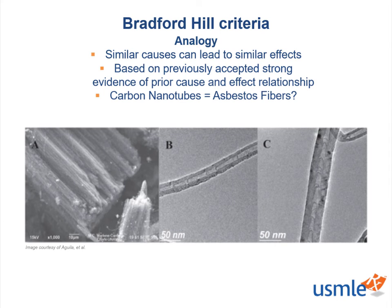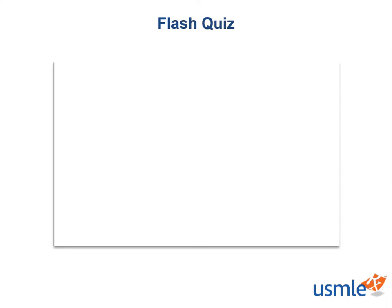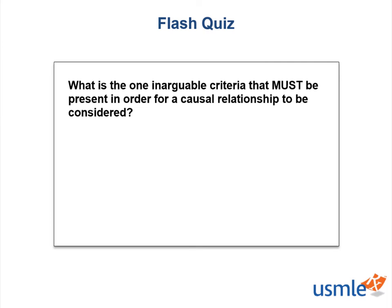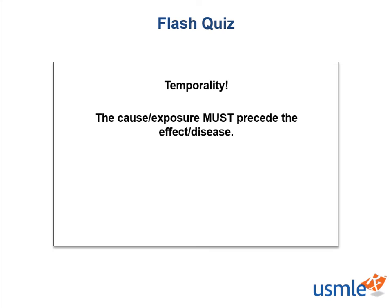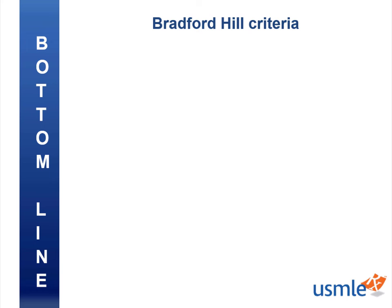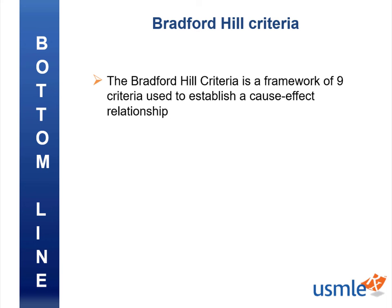That sums up our discussion on the Bradford Hill criteria. Quick flash quiz: what is the one inarguable criterion that must be present for a causal relationship to be considered? Temporality. While the other eight criteria aren't musts or set in stone, temporality is an absolute must — exposure always must precede the onset of disease, no matter how short or long the interval between the two. The Bradford Hill criteria are used in epidemiology to support cause-and-effect relationships, and historically and today they guide occupational and public health measures to prevent disease.